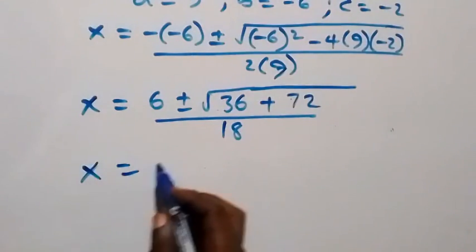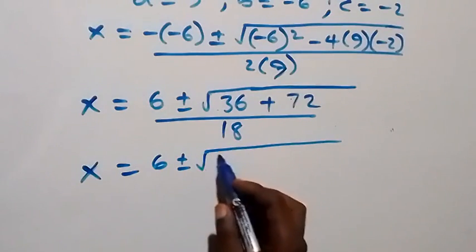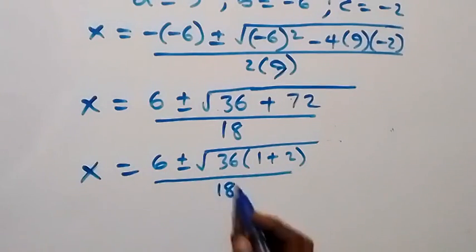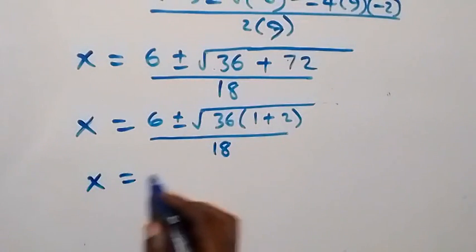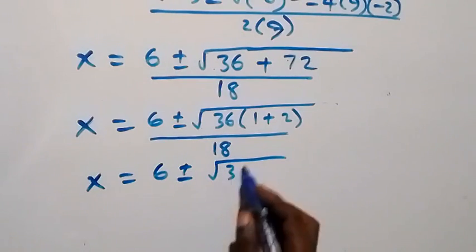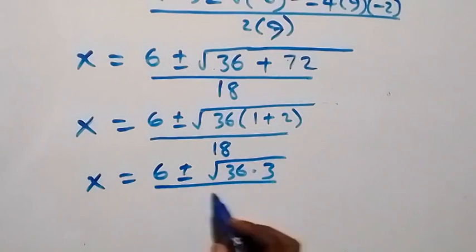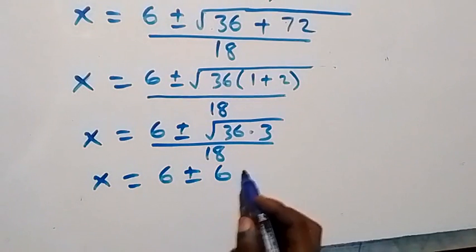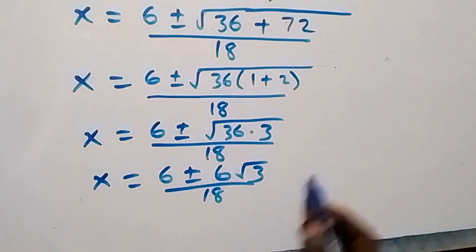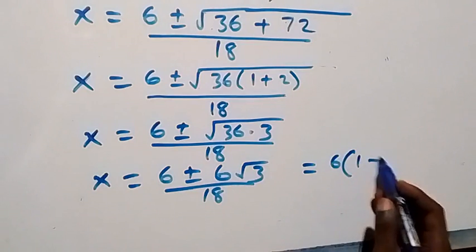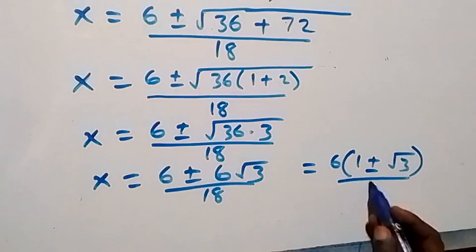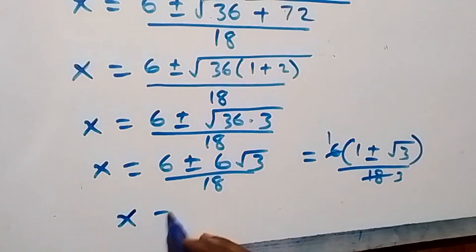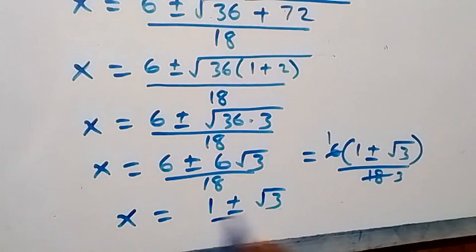This becomes x equals 6 plus or minus square root of 108 over 18. We factor 36 out from 108, leaving 1 plus 2, so root 36 times 3. Root 36 is 6, giving x equals 6 plus or minus 6 root 3 over 18. Factoring out 6, we get x equals 1 plus or minus root 3 over 3.